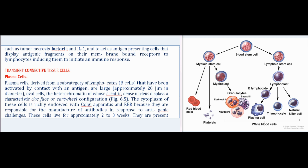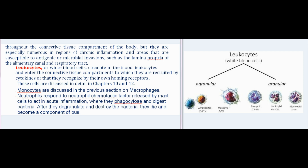Plasma cells, derived from B lymphocytes activated by antigen contact, are large (approximately 20 μm in diameter) oval cells whose eccentric dense nucleus displays a characteristic clock-face or cartwheel configuration (Fig. 6.5). The cytoplasm is richly endowed with Golgi apparatus and RER because these cells manufacture antibodies in response to antigenic challenges. Plasma cells live approximately two to three weeks and are present throughout the connective tissue compartment, especially in regions of chronic inflammation and areas susceptible to antigenic or microbial invasions such as the lamina propria of the alimentary canal and respiratory tract.